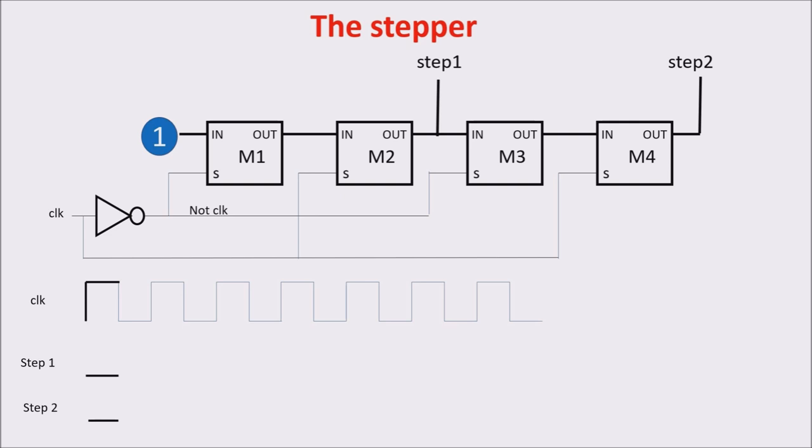With the first rise front of the clock, the first memory cell doesn't acquire the one on its input, so step 1 is 0 and step 2 is 0 because memory cell M4 acquires a 0. M2 acquires a 0 and its output remains at 0. When the down front of the clock arrives, M1 acquires the 1 in input, but M2 doesn't acquire anything and so step 1 remains at 0. M3 acquires the 0 in input and M4 doesn't acquire anything, so step 2 stays at 0.